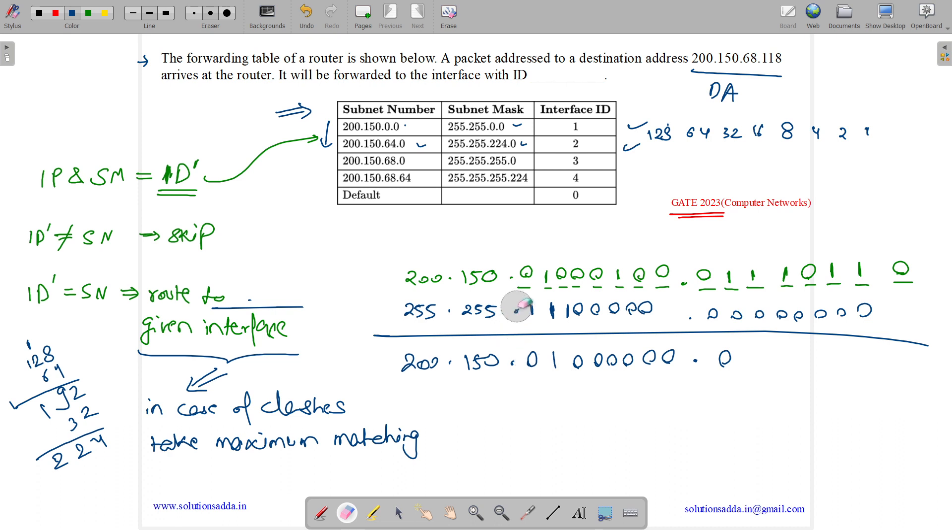Now let us see the third one. It's 255.255.255.0. So 255 means all ones. Whenever we are doing AND with 255, we will get the same number. So we will have the same number which is 68.0. Let us see whether it matches or not. Yes, this one also matches.